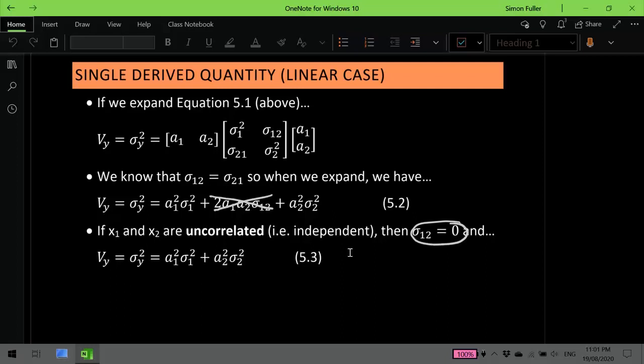which means that this part of our equation 5.2 here is in fact 0. And we end up with an even simpler expression for the variance of our single-derived quantity y. And that's equation 5.3 here.